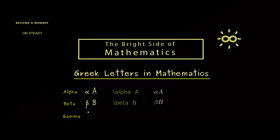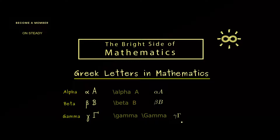The third one is gamma. The lowercase letter looks like this and the capital one looks like this. In LaTeX we have two commands — one with lowercase g and one with capital G — and we get this nice output here.